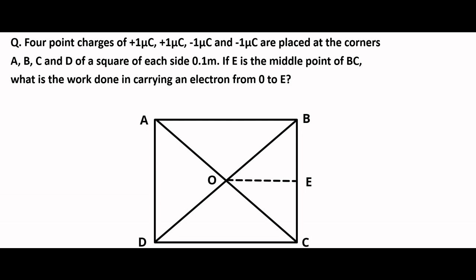Here is another question on electric potential. It is given that 4 point charges of plus 1 micro coulomb, plus 1 micro coulomb, minus 1 micro coulomb, and minus 1 micro coulomb are placed at the corners A, B, C, and D of a square of side 0.1 meter respectively. If E is the midpoint of side BC, what is the work done in carrying an electron from point O to point E?